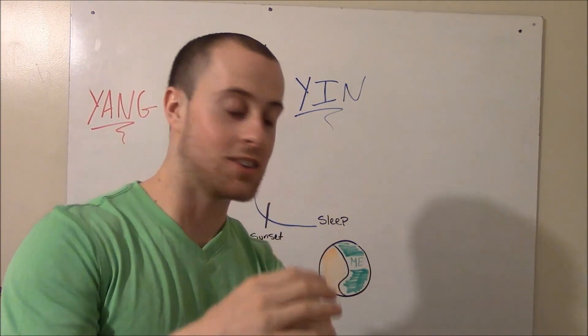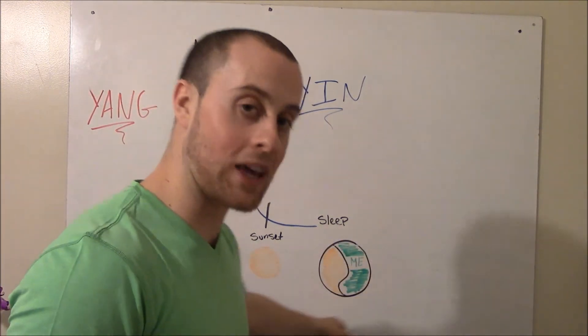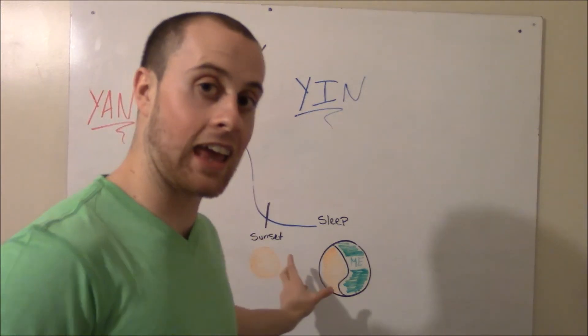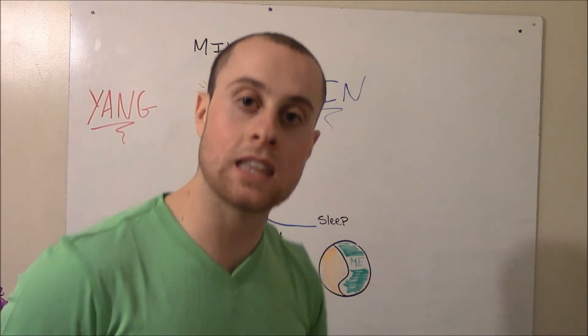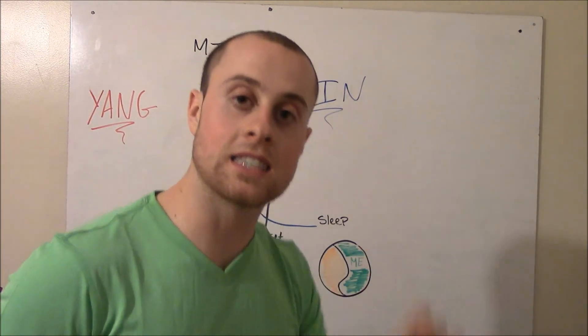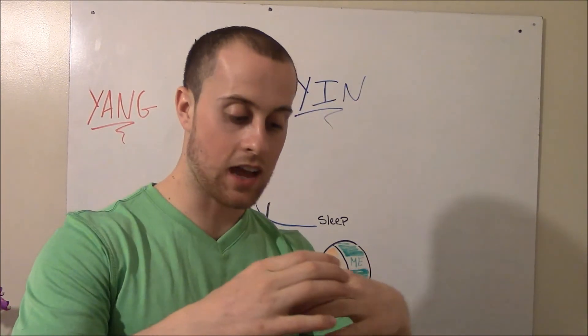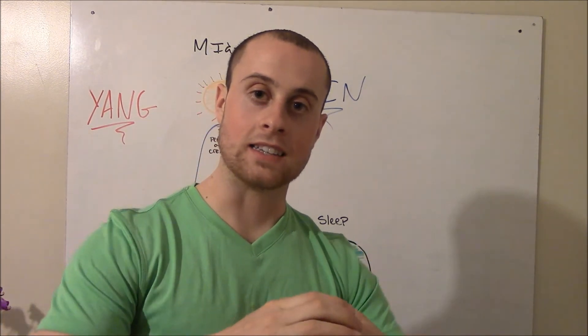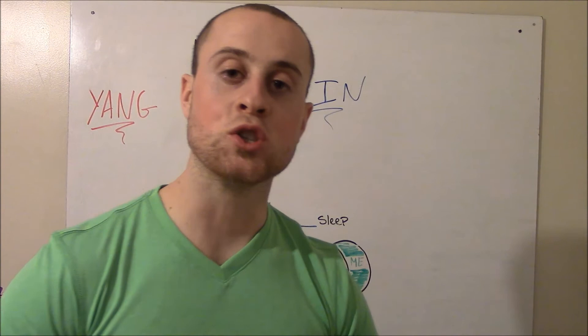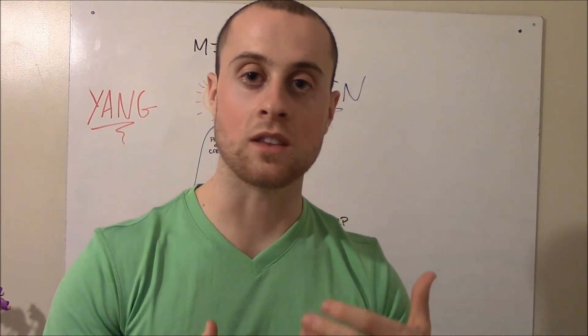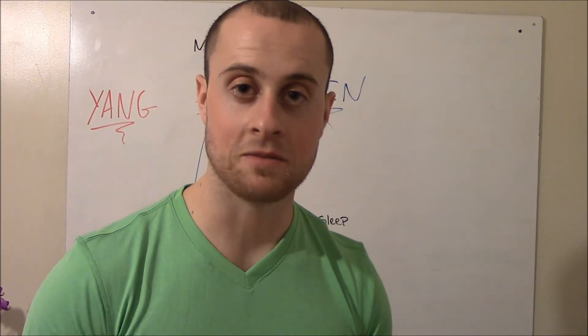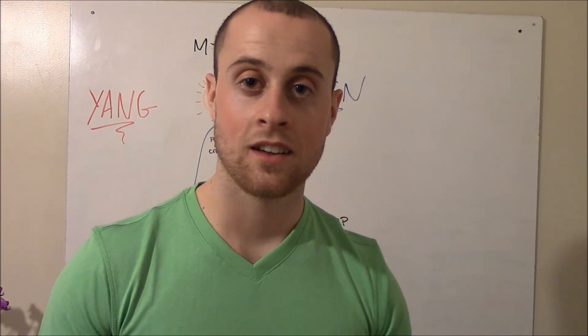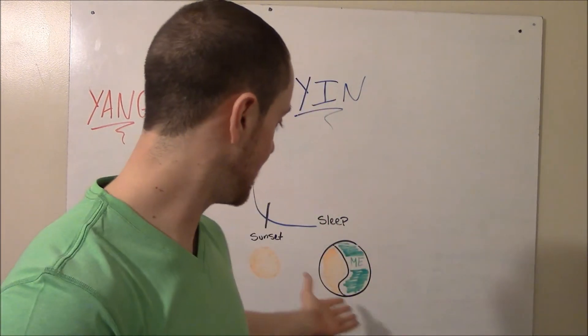Because this little yin and yang symbol right here is symbolizing me and the sun together. So now me and the sun are always together through the morning, midday, sunset, and even when I'm sleeping, the sun is sleeping with me. We're both together, we're one thing, we are a team, and that puts you in alignment with nature, in alignment with the sun, in alignment with your life. It's all a circle, isn't that beautiful?